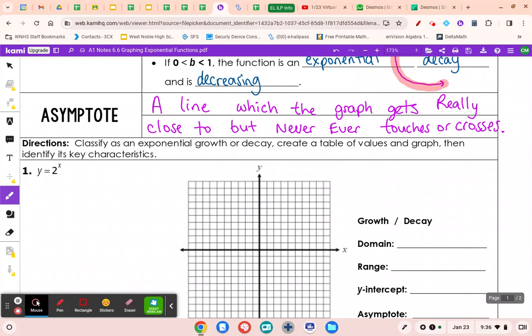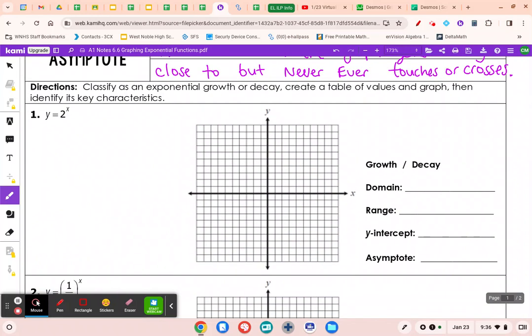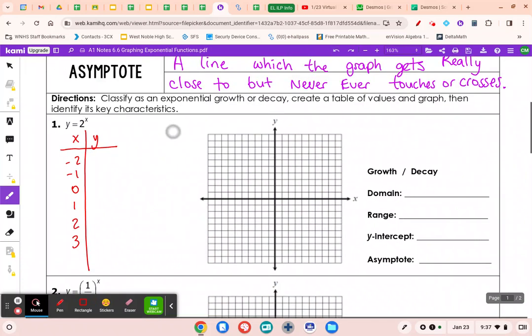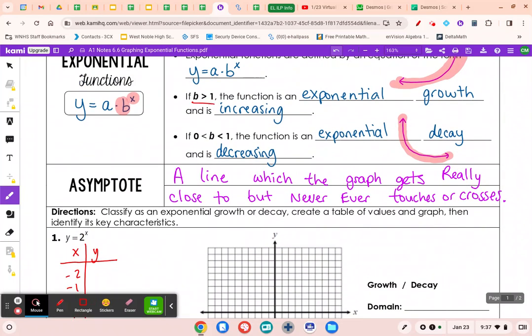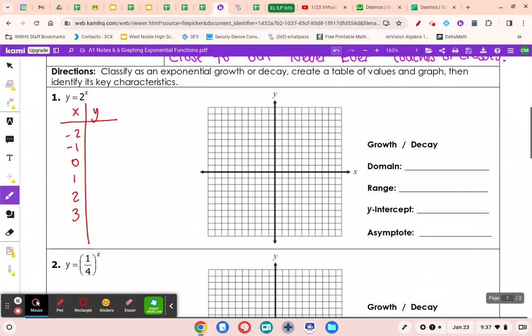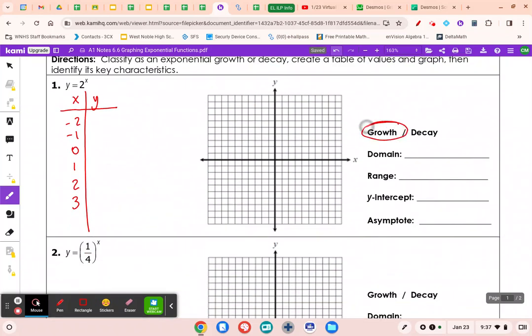Today, we are actually just going to create a table. I'm going to plot quite a few points. Anytime you're not sure how to graph something, you can always try a table. A table will not let you down. Now, we are plugging the x values in for this exponent. This 2 here is our base. It is our b and we just learned that if b is bigger than 1, we know it is growth.